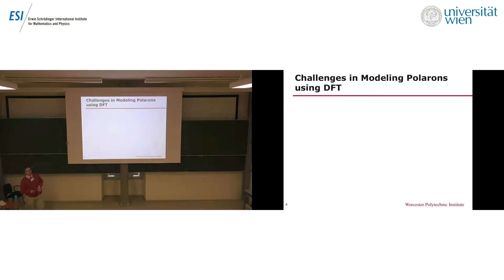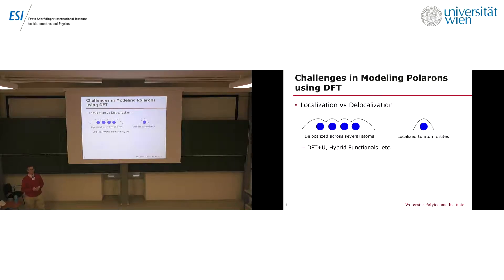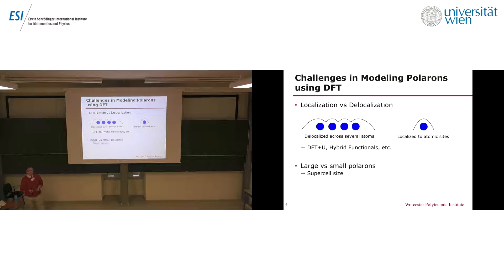Let me mention some challenges related to modeling polarons with DFT. One of the biggest challenges is the issue of localization versus delocalization. Typically, if you use GGA functionals with DFT for a lot of materials, it fails to properly describe polarons. You'll get delocalized solutions where electrons are spread throughout your cell, and you just won't get a proper description of a polaron. We have methods like DFT+U and hybrid functionals that allow us to overcome this error and more properly describe a localized polaronic state.